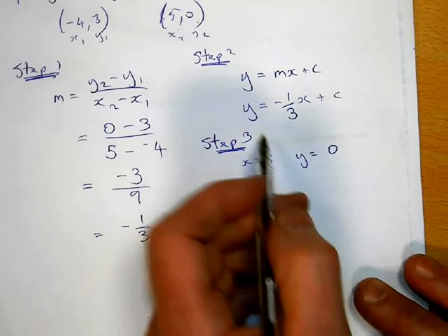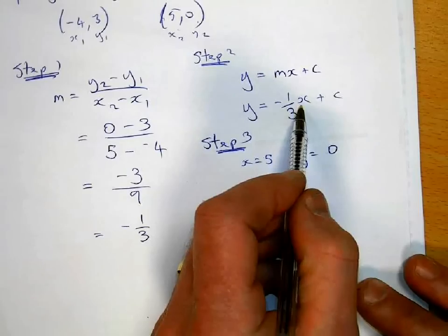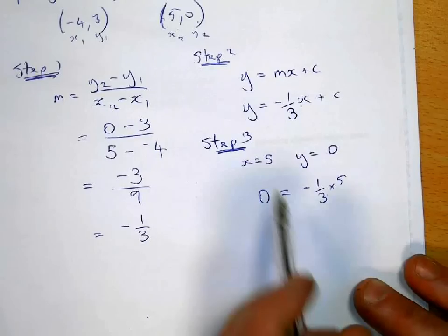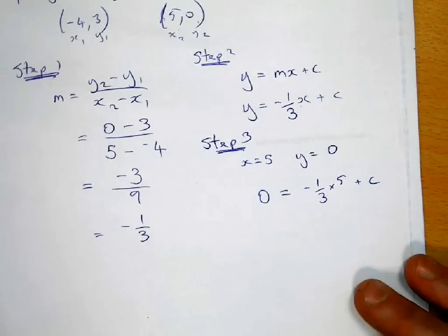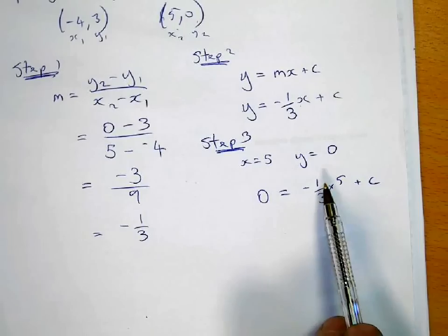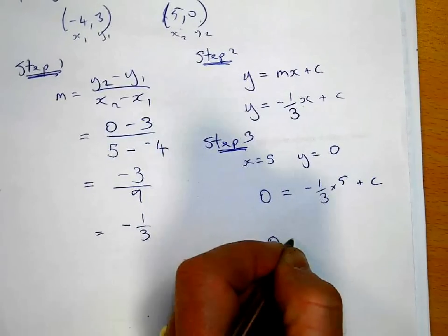So replace y with 0. I'm replacing this x now with 5. So that there is minus 1 third times 5. And then I'm going to add on the c. Now because you've been practicing fractions so much, when you multiply a third times 5, what would you get?